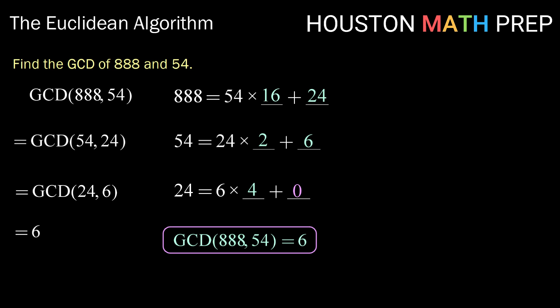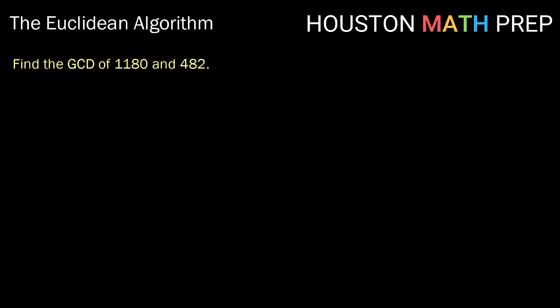All right, let's see if we can do that one more time. Let's check out the Euclidean algorithm for finding the GCD or greatest common divisor of 1180 and 482. So starting off, we're going to rewrite 1180 as 482 times something plus something. Doing our long division there, that's going to be times 2 with a remainder of 216. That means that the GCD of 1180 and 482 is equal to the greatest common divisor of 482 and the remainder of 216.